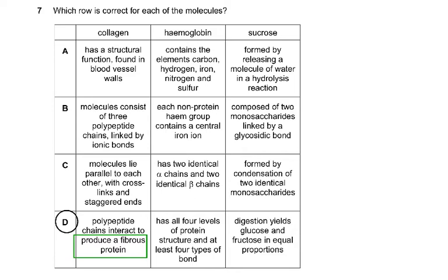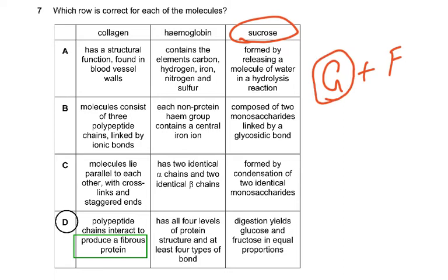Question seven asks which statement is correct for collagen, hemoglobin, and sucrose. The answer is D. Collagen is a fibrous protein. Hemoglobin has all four levels of protein structure and at least four types of bond. Sucrose digestion yields glucose and fructose in equal proportions because sucrose is made of one glucose and one fructose molecule — both hexose sugars — joined by a glycosidic bond.